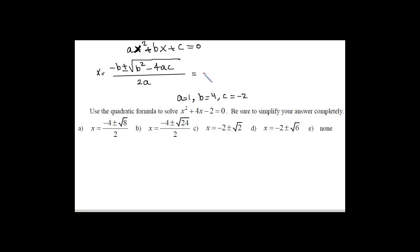So let's go down, plug everything in here. Substitute for everybody. B is 4, so -4 ± √(4² - 4 times a is 1, c is negative 2), and then a is 1 here.